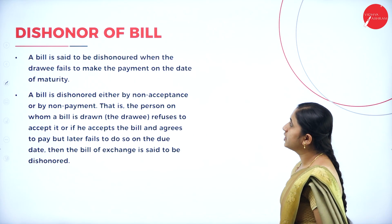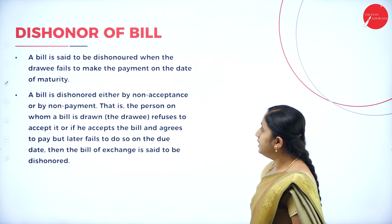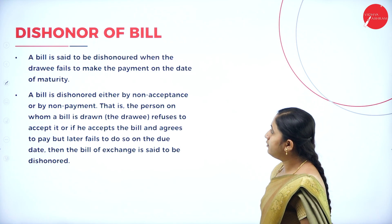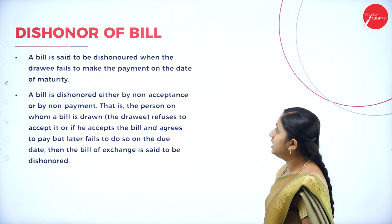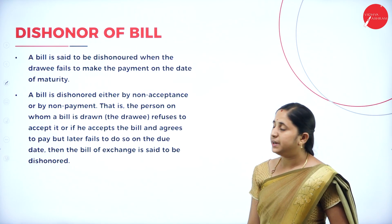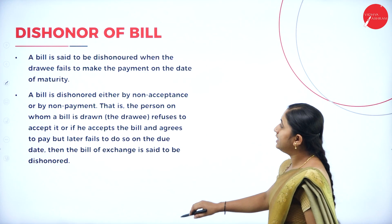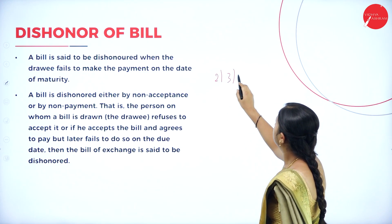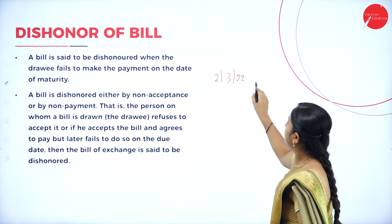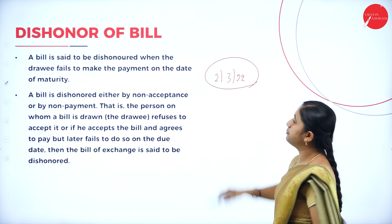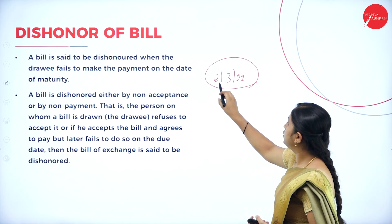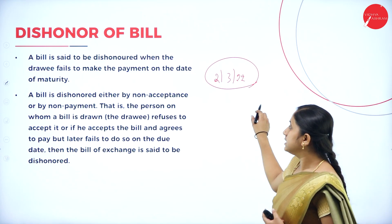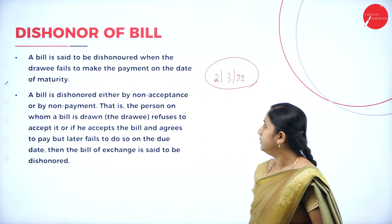Dishonor of bill: a bill is said to be dishonored when the drawee fails to make the payment on the date of maturity. In the earlier example of 2nd March 2022, if the acceptor of the bill fails to pay the money on that date, then it is considered as dishonor of bill.